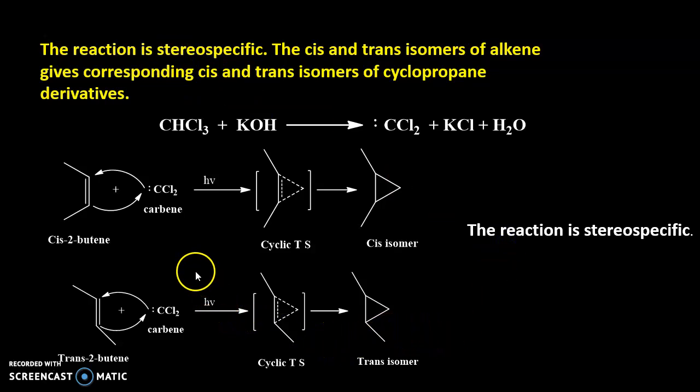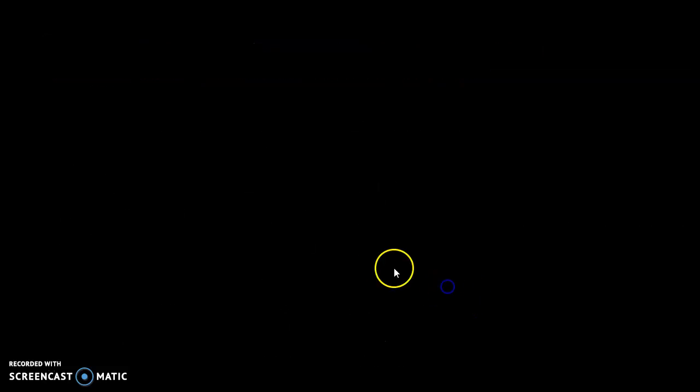To summarize: chelotropic reactions are stereospecific, they are simply insertion reactions, and they are a special type of cycloaddition reaction. In this video we will stop here. In the next video we will see another concept. Thank you, have a nice day.